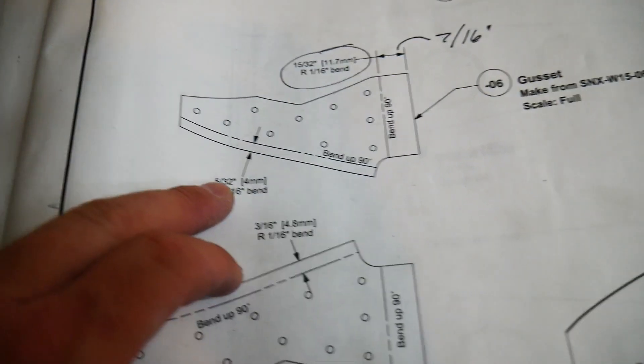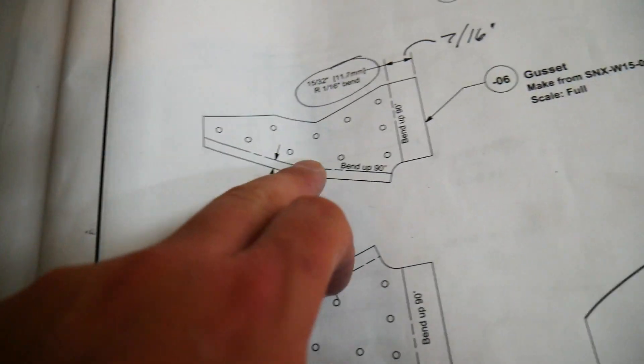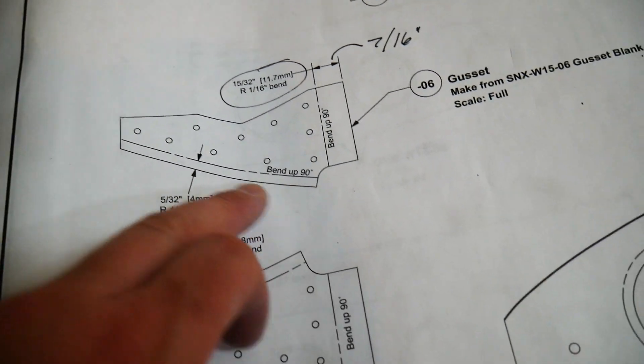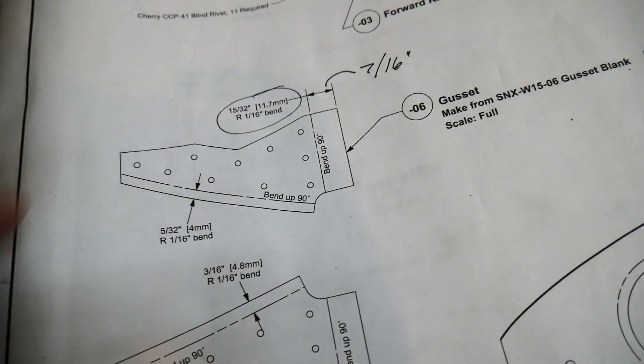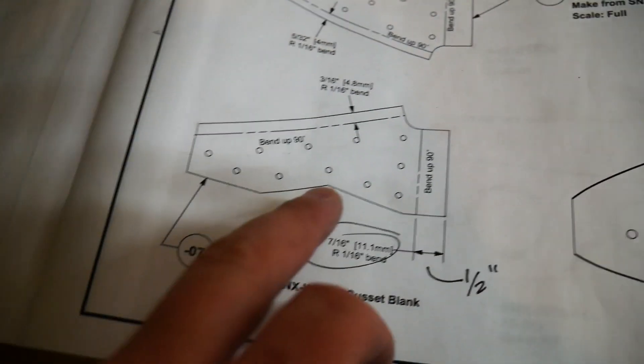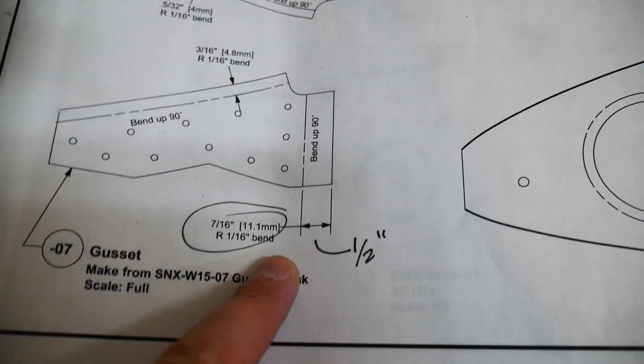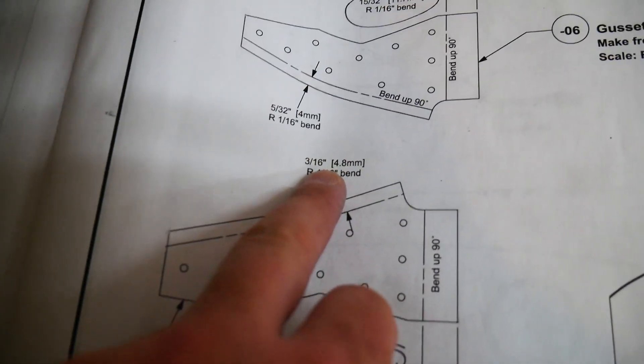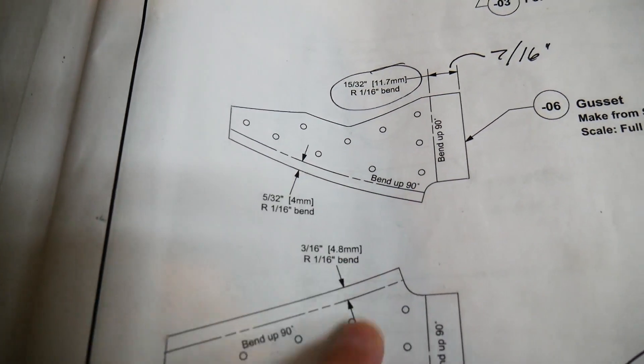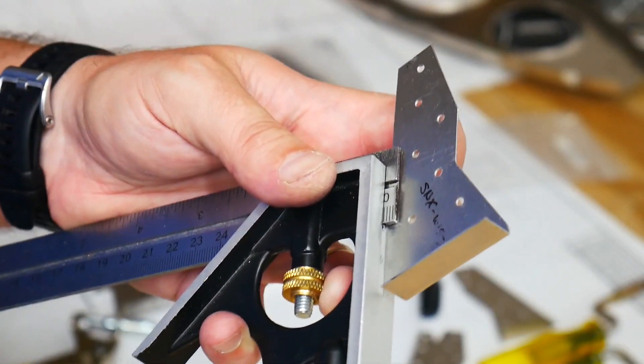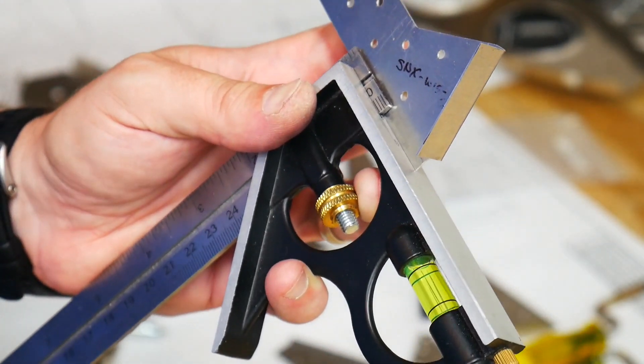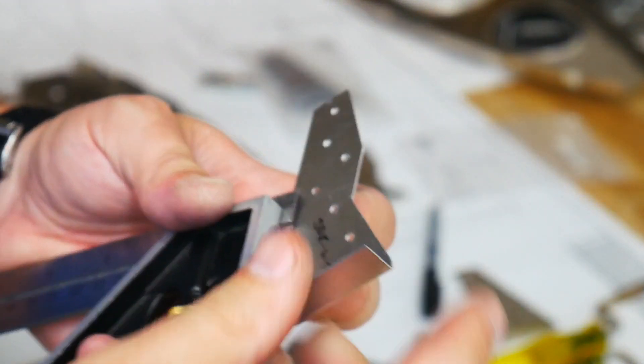Alright and then one last thing to complete this gusset, we need to create a bend along this line here. I'm gonna go ahead and use the measurement that Sonex gives for this. There's nothing that it needs to line up with and fit into so this 5/32 inch bend will be just fine. Take note though that the 06 or 07 has a slightly different size. It's 3/16 for that one and 5/32 for this line. So slightly different depending on which one of these gussets you're working on. I've got my adjustable square here set to 5/32 of an inch and just gonna draw a line there to make another bend.